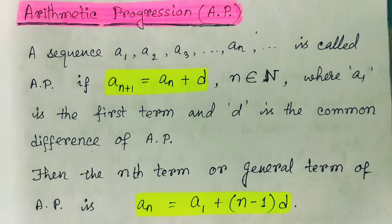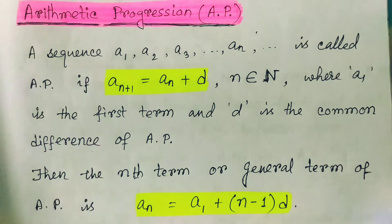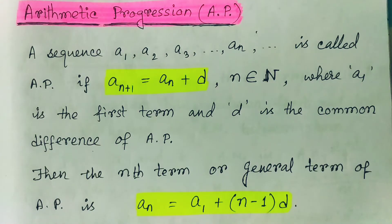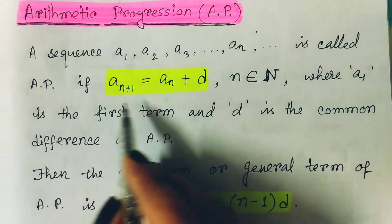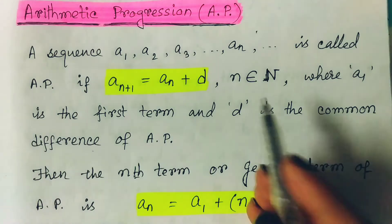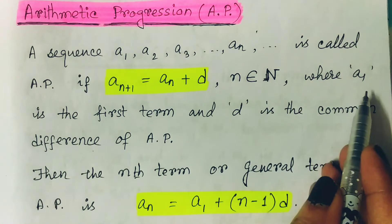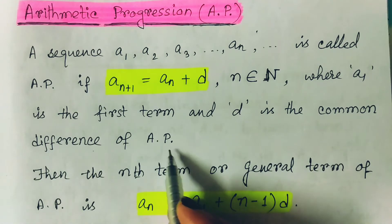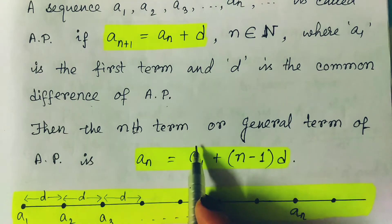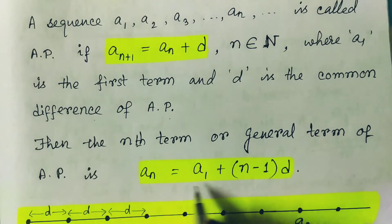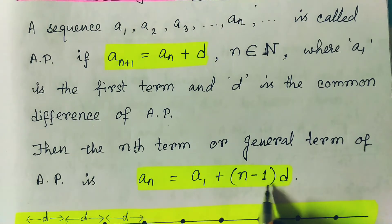The definition for arithmetic progression: a sequence a1, a2, a3, ..., an, going to infinity, is called an arithmetic progression, or AP in short, if a(n+1) equals an plus d, where n belongs to the natural numbers, where a1 is the first term and d is the common difference of the AP. The nth term or general term is then an equals a1 plus (n minus 1) times d.